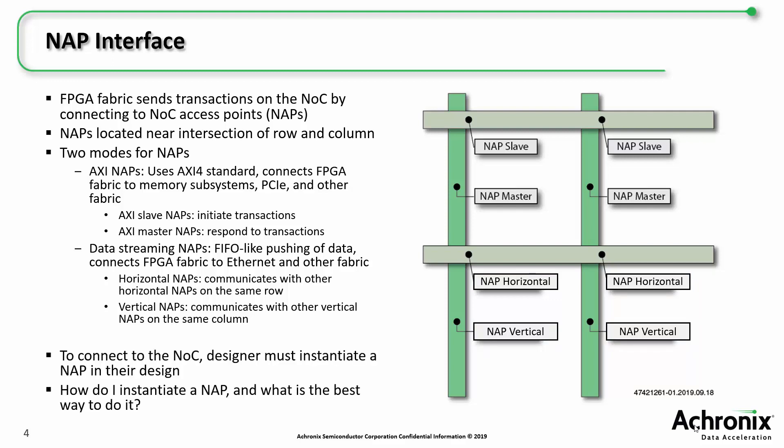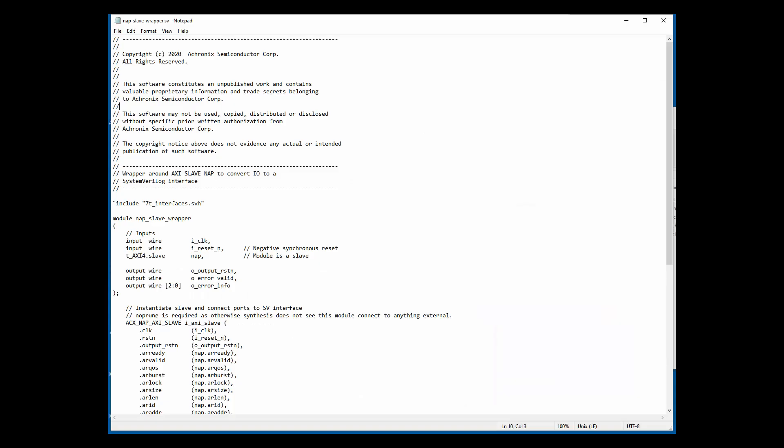If you want to connect to the NOC, you need to instantiate a NAP in your design. Next, we'll dive into some real code so you can see an example of how to do this. For this example, I'm going to make use of our NOC reference design, which is available for download. Here, I'm going to show you how to instantiate an AXI slave NAP in your design. I used Achronix's macro library cell, the ACX NAP AXI slave, which is included in your ACE installation.